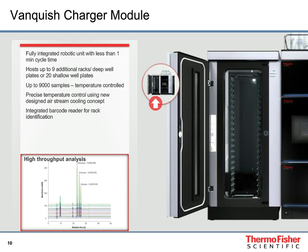For the Vanquish charger module, we can provide an additional 20 shallow well plates, or 9 deep well plates, or additional racks to achieve impressive peak capacity. We have a barcode reader in both the charger module and the autosampler. Here is an example of an ultra-high throughput application running in just 60 minutes analysis time, with retention time precision below 0.01% RSD in this extremely fast separation.